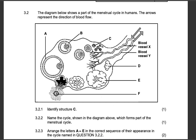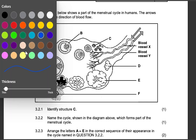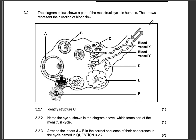Our third question is from September 2023, Ghao Teng. The diagram below shows a part of the menstrual cycle in humans. The arrows represent the direction of blood flow. So these arrows here, they're representing the direction of the blood flow. Identify structure C.